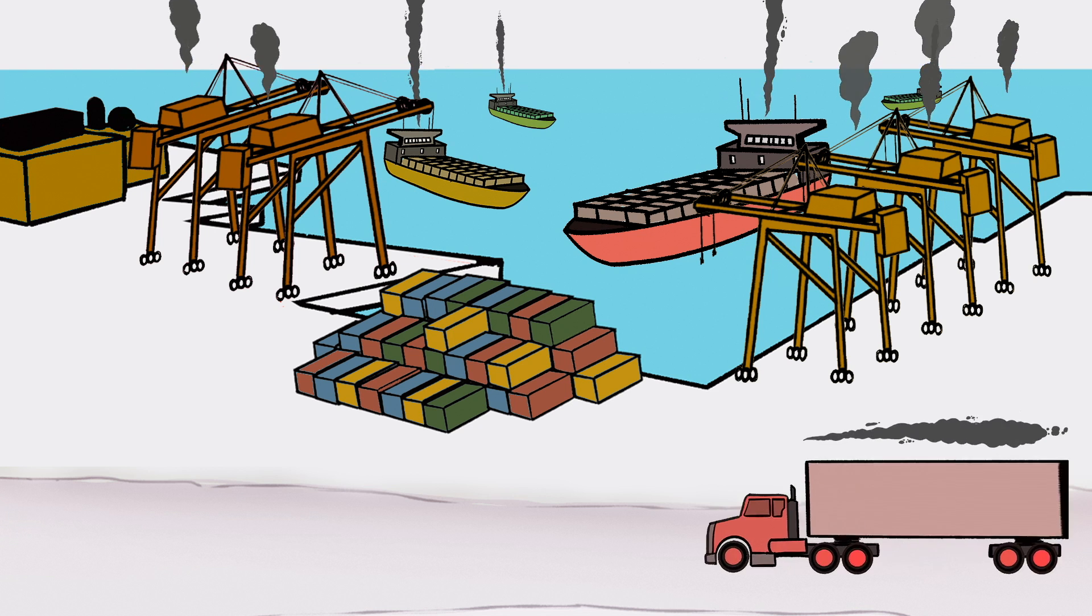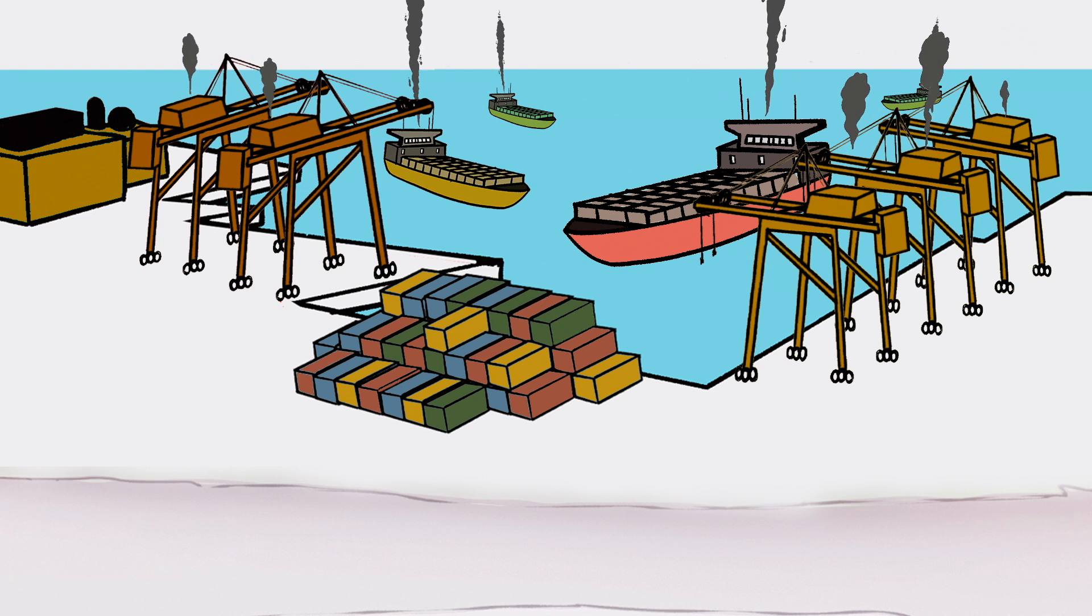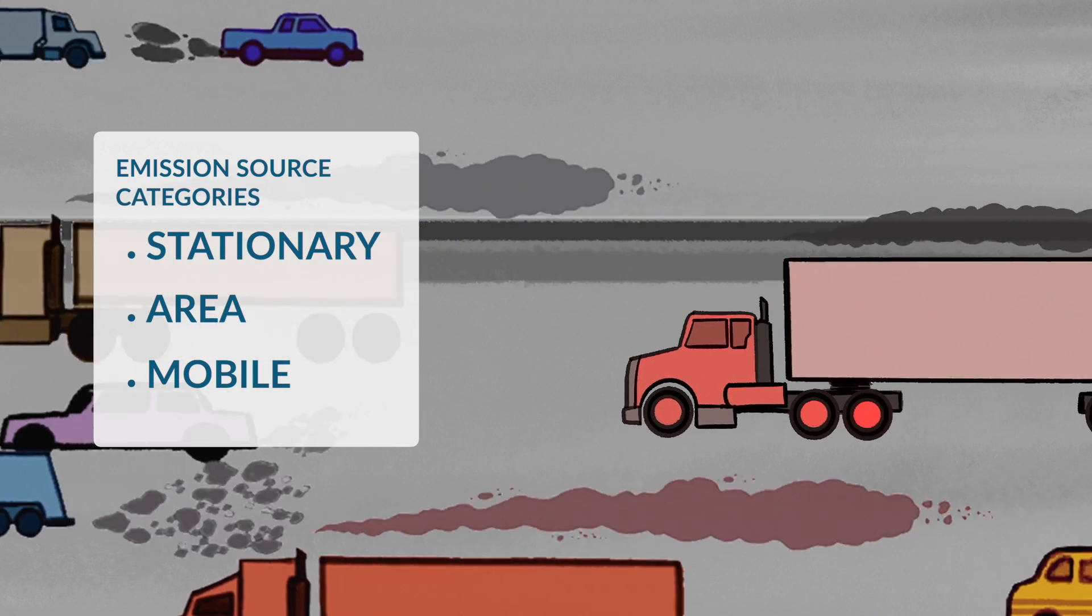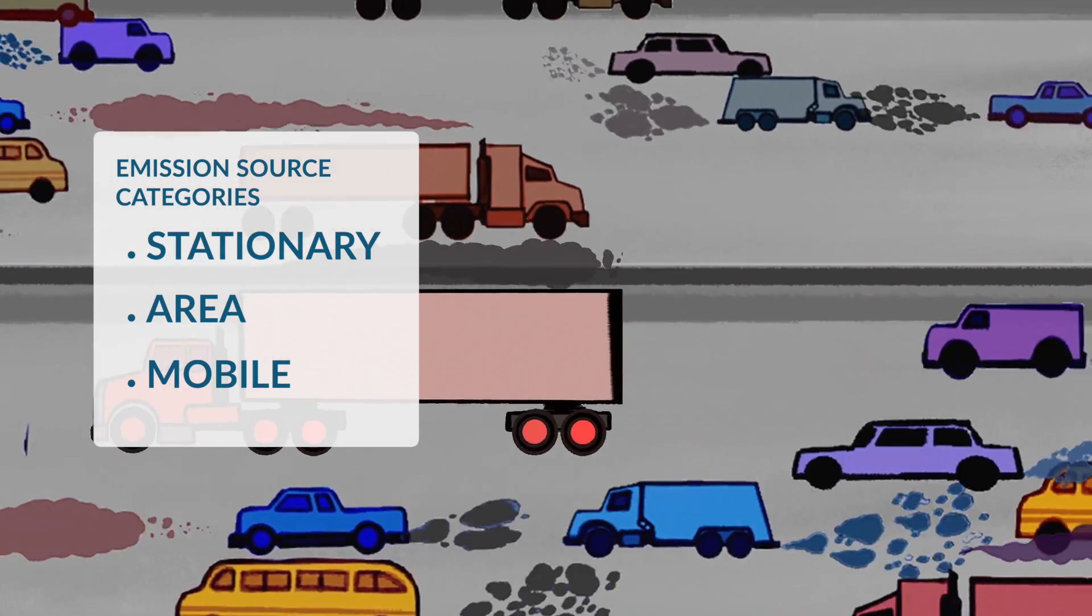Emissions are generated from a wide range of sources, such as cars, trucks, and factories. These sources are divided into three categories: stationary, area, and mobile sources.